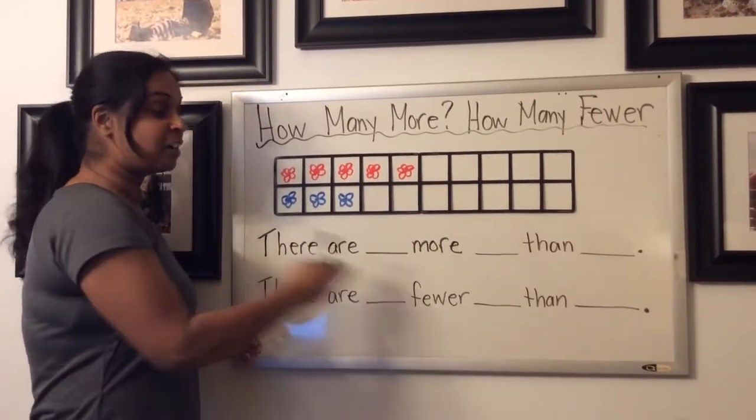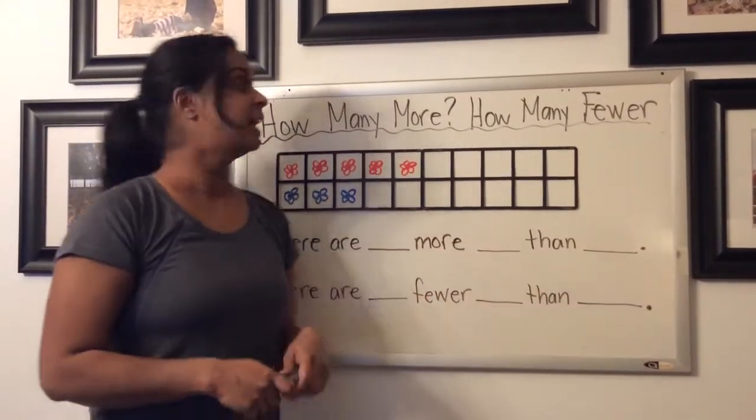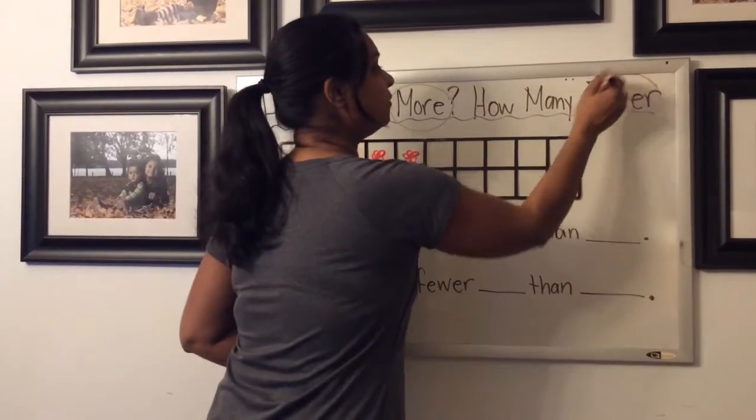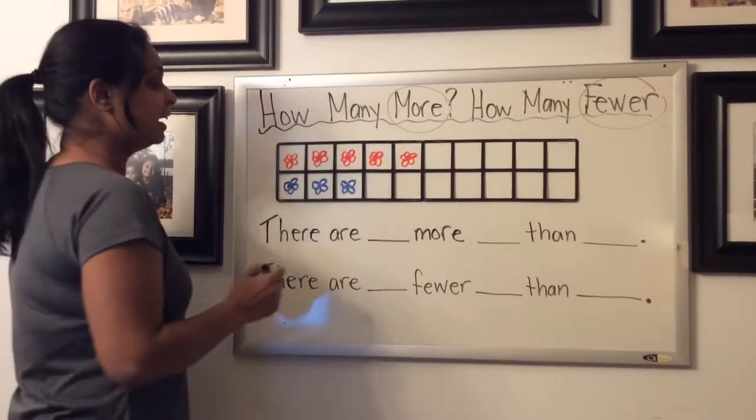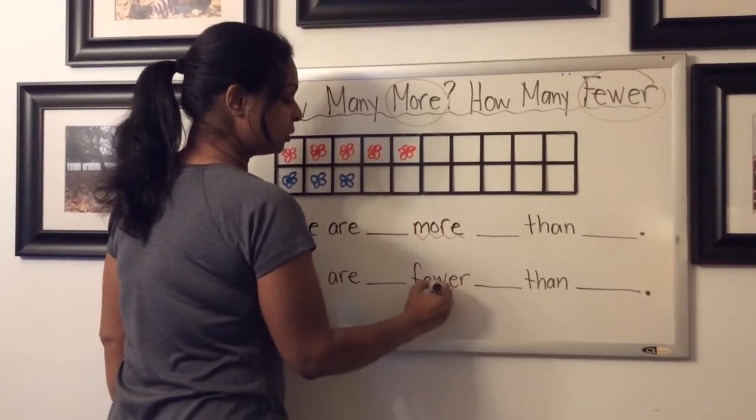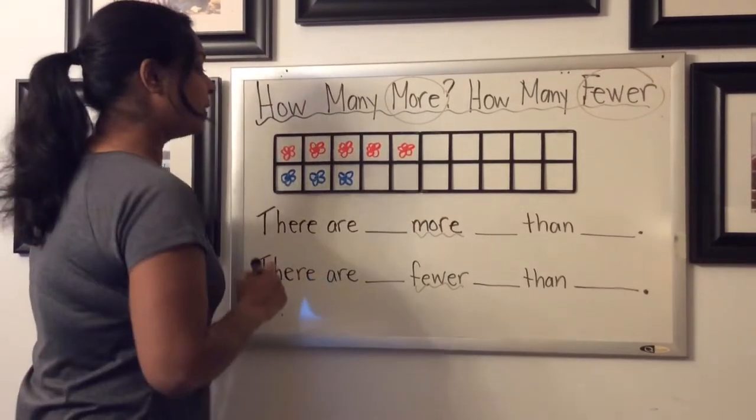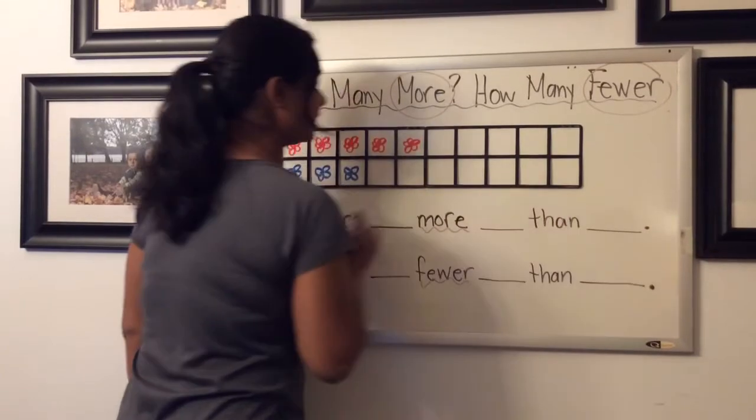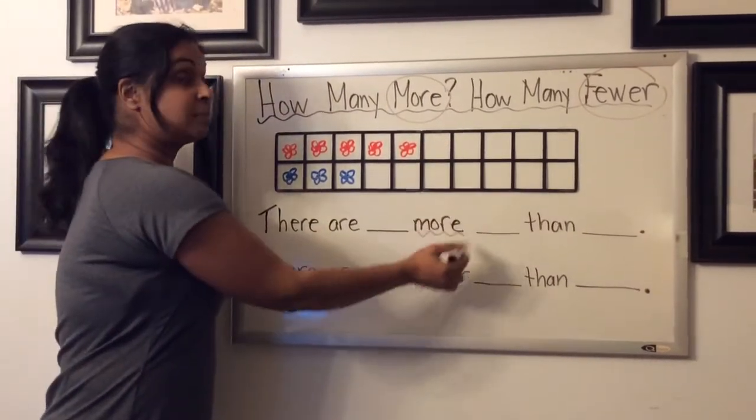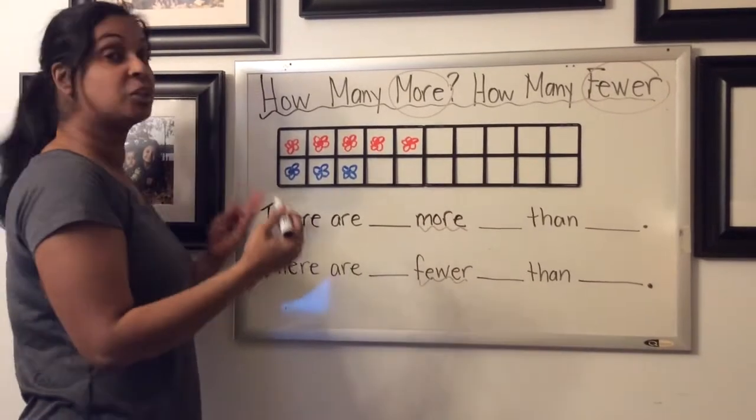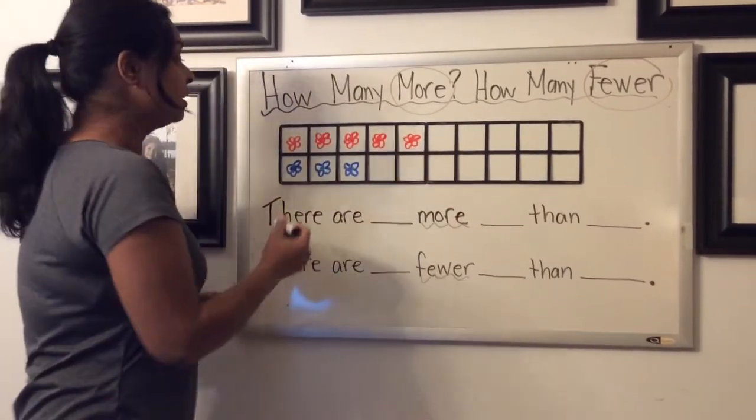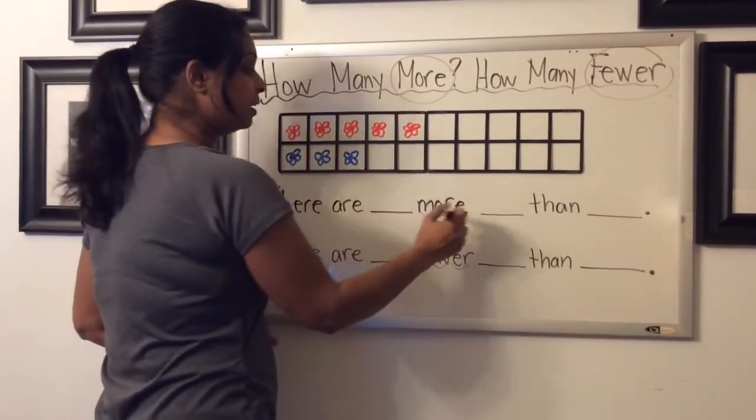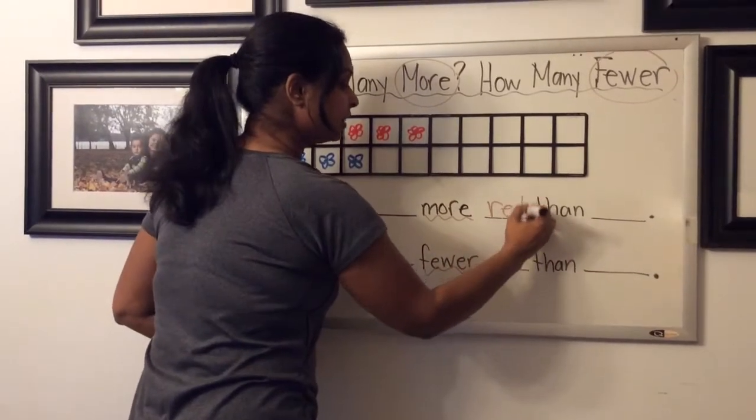Okay, so I have a couple of sentence starters here with some fill in the blanks. So today we're going to be specifically looking at the words more and fewer when we're answering our questions about our data. So here's the word more here and here's the word fewer there. The first sentence says there are this many more this than that. So this word more is my keyword. So I want to figure out first of all, which one has more, the red or the blue. So we did count them up and we found out the red had five and the blue had three. So there are more red than blue.